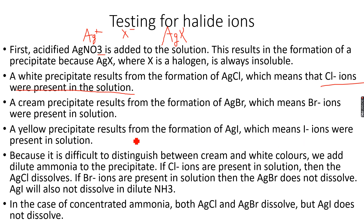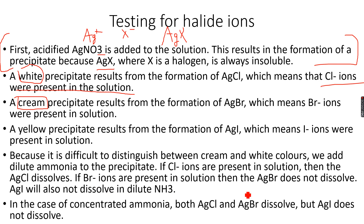Sometimes it's very difficult to distinguish between the white and cream colors because they're very close — it's really difficult to judge. To avoid this confusion, we add dilute ammonia (NH₃) to the precipitate. Once we have carried out the reaction with acidified AgNO₃ and obtained the precipitate AgX, we add dilute NH₃. In the case of AgCl, the precipitate will dissolve. In the case of AgBr, the precipitate will not dissolve.